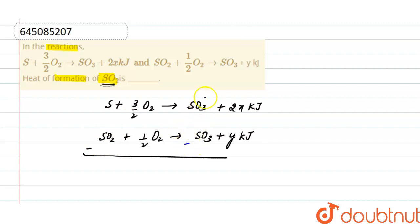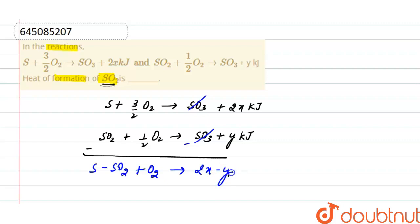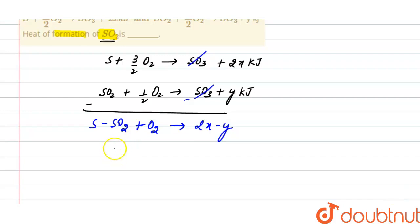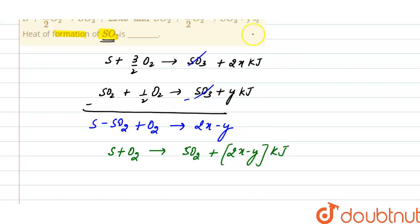If we subtract the reactions, SO₃ and SO₃ will cancel out, and we get sulfur minus SO₂ plus O₂, giving us 2x minus y. Rearranging, we get S plus O₂ gives SO₂, and the heat released for the formation of SO₂ is 2x minus y kilojoules.